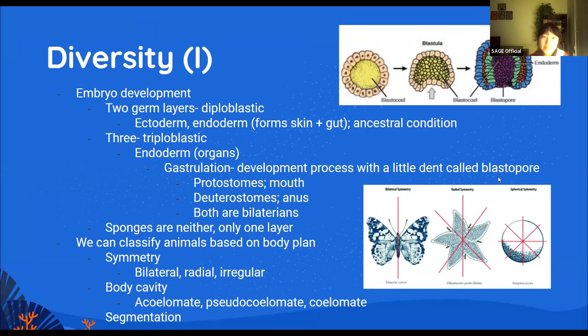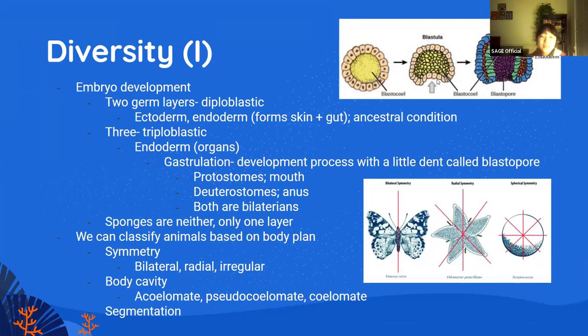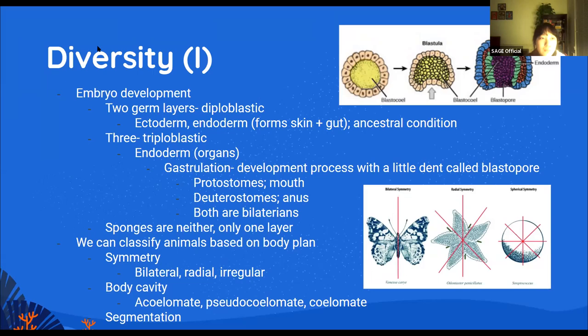The only weird group of animals, really, are sponges — because sponges technically don't have any true tissues, so they're only one germ layer. They're not diploblastic or triploblastic. We can also classify animals further based on their body plan. All triploblastic animals are bilateral, but you also have radial animals — centered around an axis, like a circle — and animals with no symmetry that are irregular. We can also classify them based on their body cavity, which is like the fluid within their ectoderm — their skin.